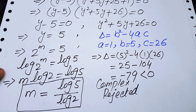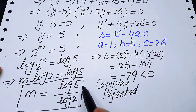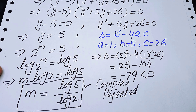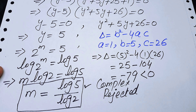We have only one solution to this nice algebra problem: m equals log 5 over log 2. This is our final answer. Thank you so much for watching this video — please subscribe to the channel for more exciting videos.